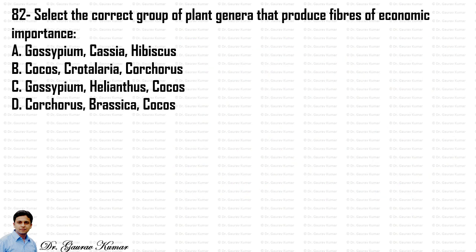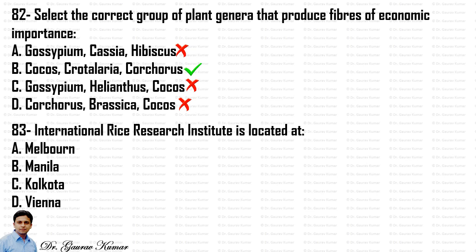Select the correct group of plant genera that produce fibers of economic importance. Cocos, Crotalaria and Corcorus are the important fiber-yielding crops, so the answer is B. The International Rice Research Institute (IRRI) is located at Manila, Philippines — that is option B.